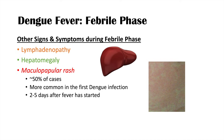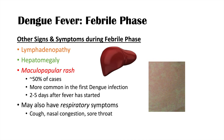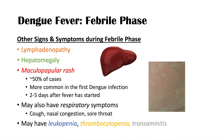Less common symptoms include respiratory symptoms like cough, nasal congestion, and sore throat. Worrisome lab findings in the febrile phase include leukopenia or low white blood cell count, thrombocytopenia or low platelet count, and transaminitis or elevated liver enzymes like ALT and AST. These occur in a small subset of febrile phase patients but indicate a potentially severe dengue fever presentation.